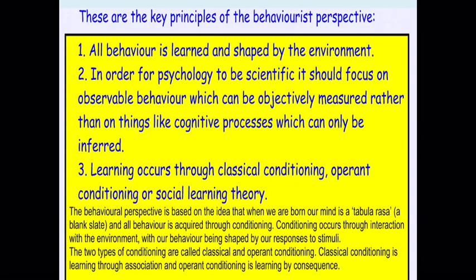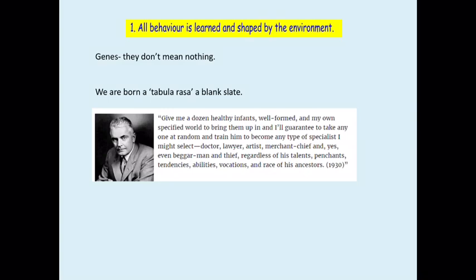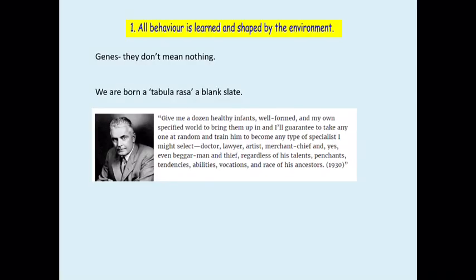Here are the three key concepts — pause and read them through, then we'll take them one at a time. First: all behavior is learned and shaped by the environment. We are born, according to strict behaviorists, a tabula rasa — from the Latin meaning 'blank slate' — unwritten. Everything we become is post-birth; genetics don't mean a thing, there are no predispositions, everything is caused by the environment.